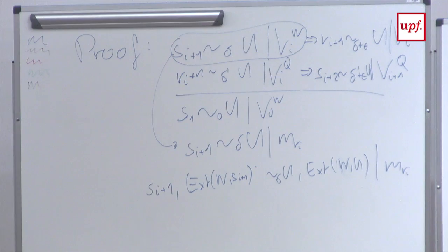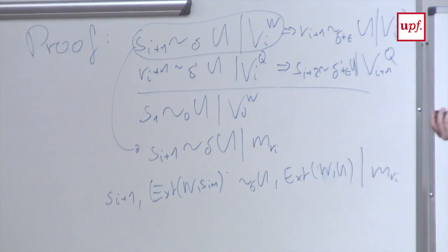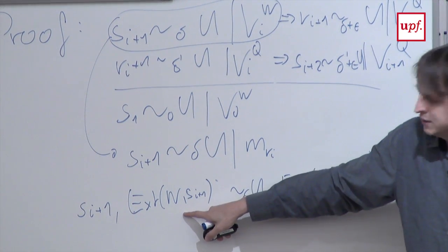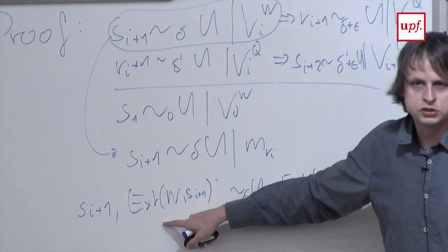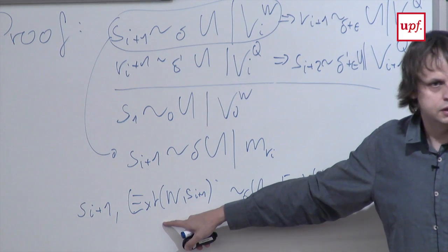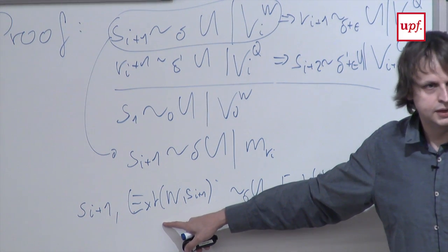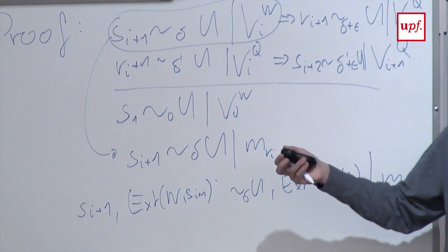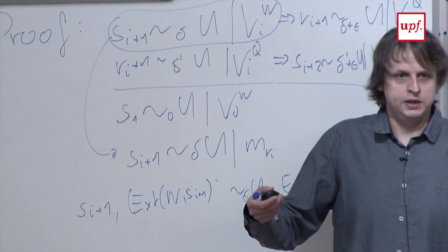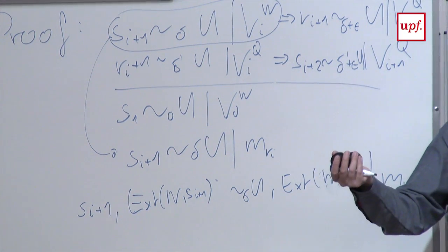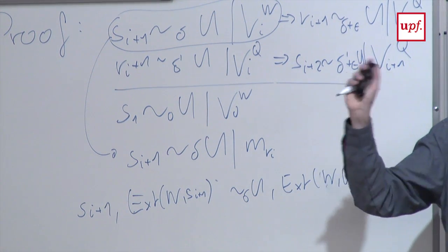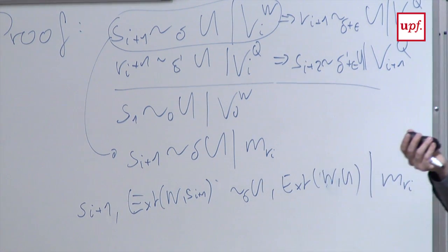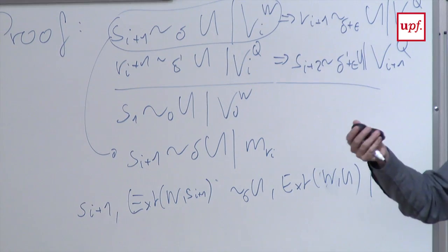A Markov chain here means that these variables can be dependent on each other, but the dependence of W and S_{i+1} is totally captured by the intermediate messages. Once you know M_{r+1}, you don't care about S_{i+1} to learn something about W. Everything you can learn about W from Q and the messages, you can already learn just from the messages — so Q doesn't add information about W given the messages.